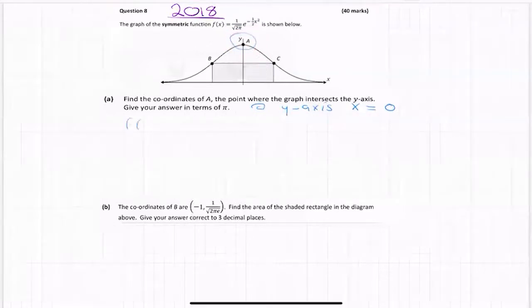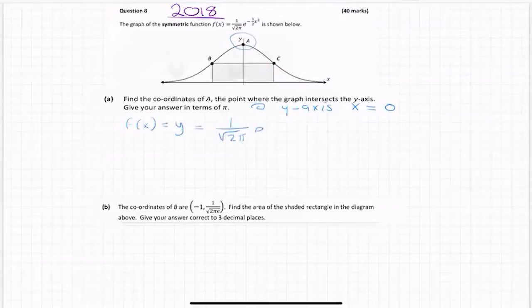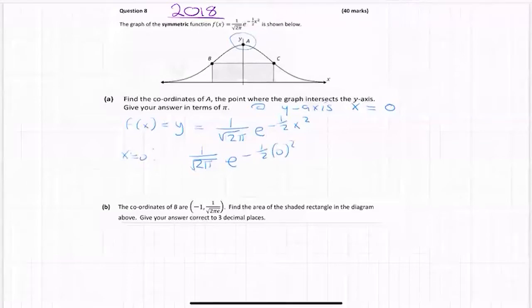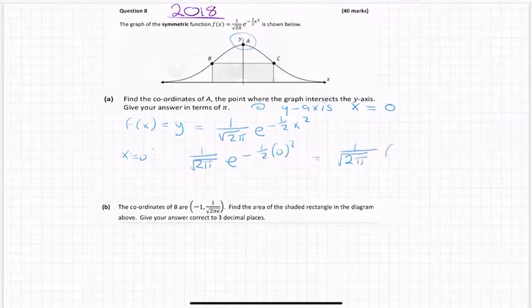So we know that f(x), which is y, is equal to 1 over root 2π · e to the minus a half times zero squared. And that'll end up being e to the power of zero. And anything to the power of zero is one — not zero, as you might think, but one. So I'm getting 1 over root 2π for that. And it said to leave your answer in terms of pi. So that's my y-coordinate.